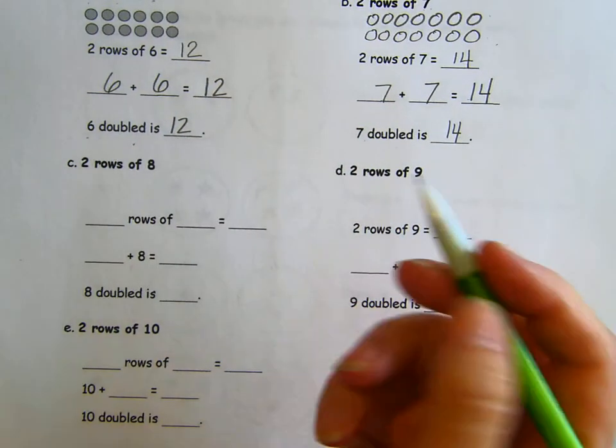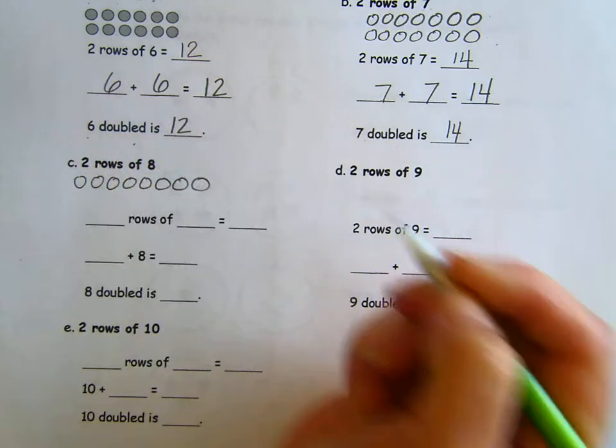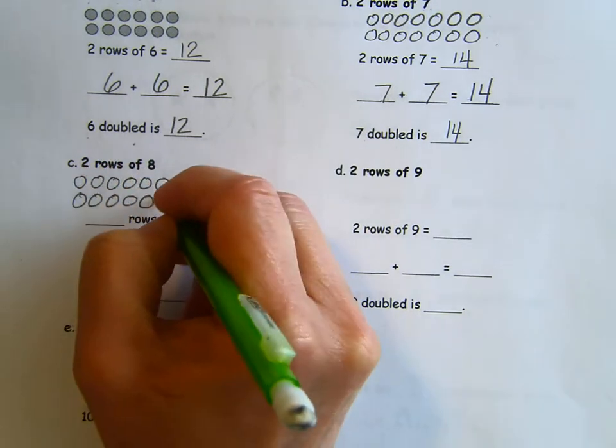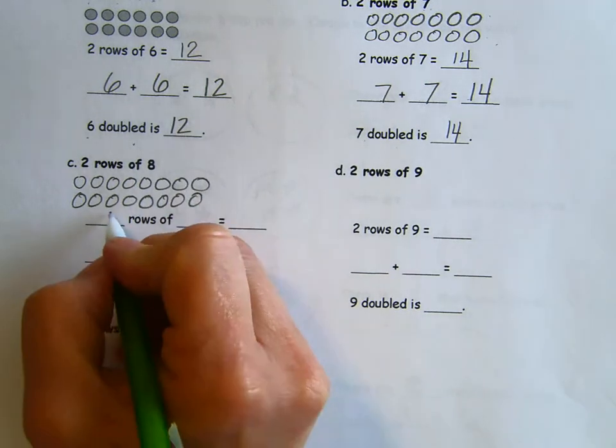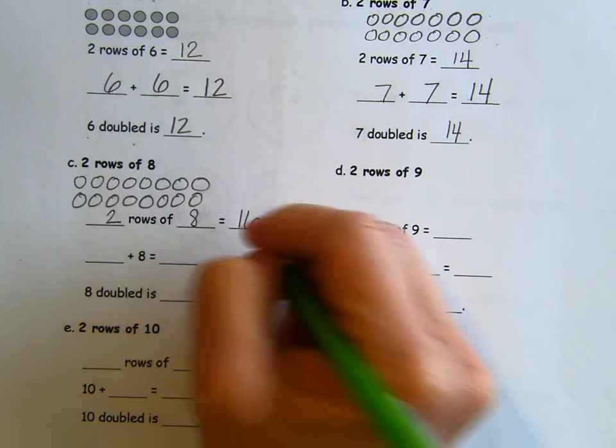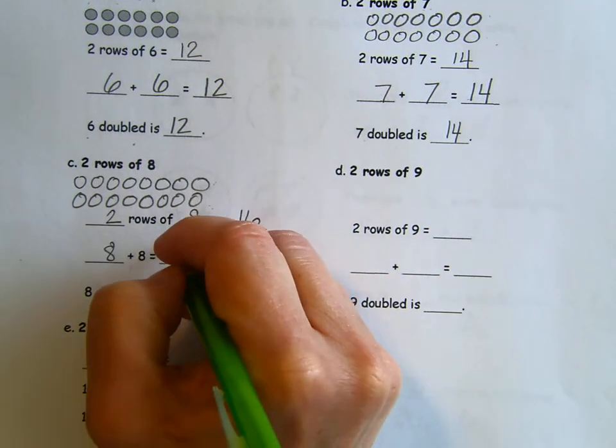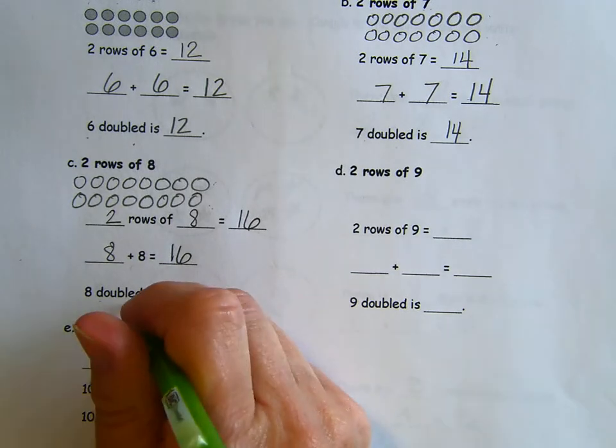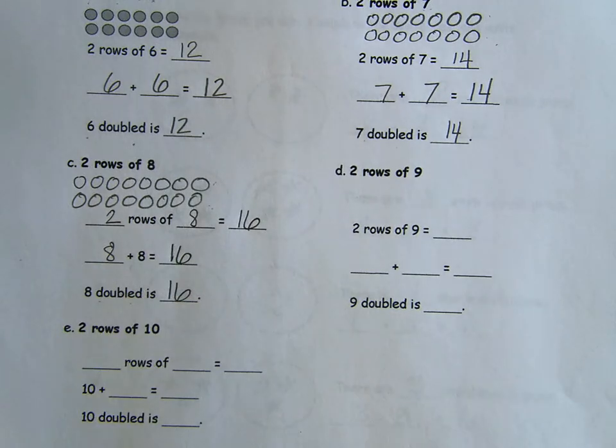Two rows of eight. One, two, three, four, five, six, seven, eight. One, two, three, four, five, six, seven, eight. Oh, I almost did that too big. There's not much room left. I have two rows of eight and that makes 16. That's my doubles. Eight plus eight equals 16. Eight doubled is 16. If I double eight, I get 16.